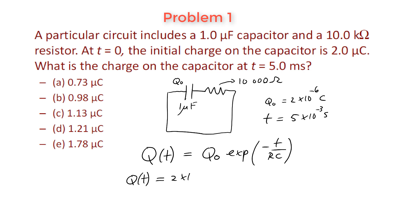So this is two times ten to the minus six. We have exponential, and we want to know at five milliseconds, so don't forget the negative. Five times ten to the minus three.